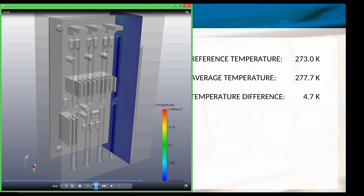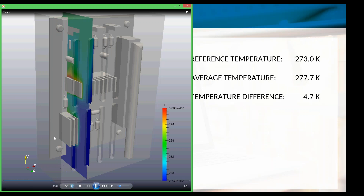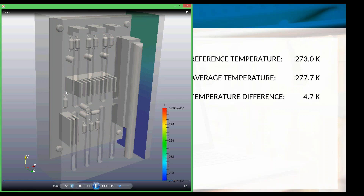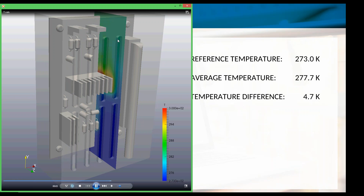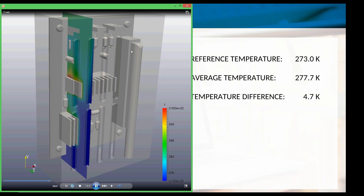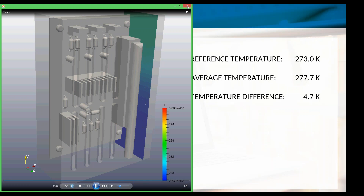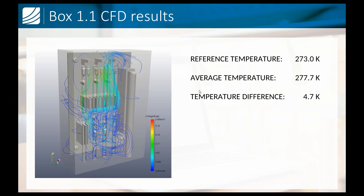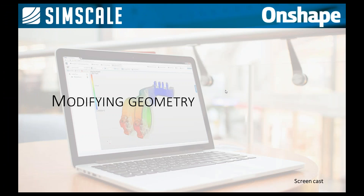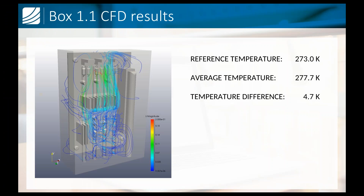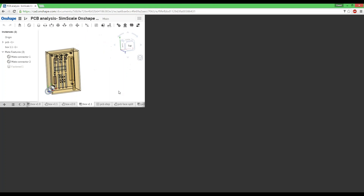Looking at images of the cuts through the domain showing velocity magnitude, there is a big pattern with high velocity flow close to the radiators. Surprisingly, these radiators did not have a very high temperature, which indicates either the mesh has some trouble there or the simulation has not yet fully converged. We can also take a look at temperature profiles — as expected, the temperature is highest close to the PCB board and accumulates in the top part of the domain.